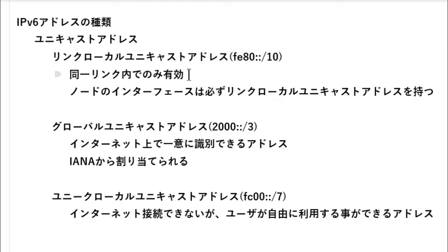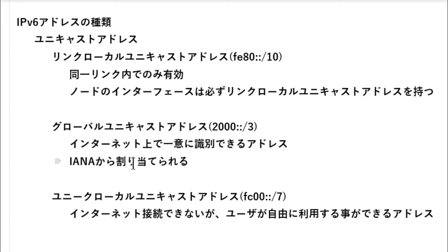IPv6アドレスの種類を見ていきましょう。ユニキャストアドレスは大きく3つに分かれています。1つ目がリンクローカルユニキャストアドレス。これはFE80::/10で表現されているアドレスで、同一リンク内でのみ有効なアドレスです。ノードのインターフェースは必ずこのリンクローカルユニキャストアドレスを持っています。次はグローバルユニキャストアドレス。これは2000::/3で表現されているアドレスで、インターネット上で一意に識別できるアドレスです。